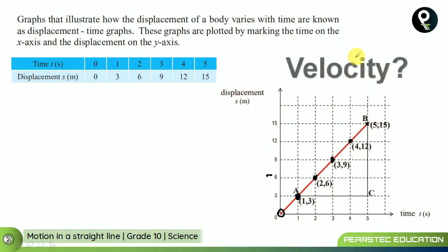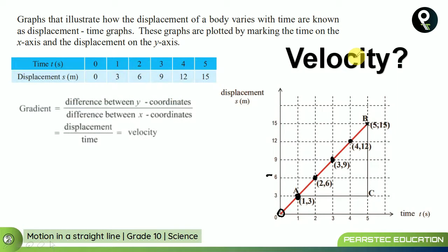Now we can find the velocity. The gradient is the difference between y coordinates and difference between x coordinates. That's displacement divided by time, and you will find out the velocity. As per this equation, the gradient is BC divided by AC.